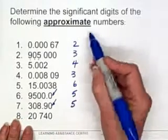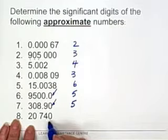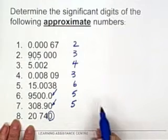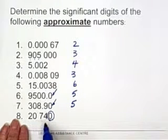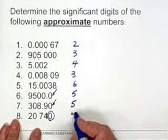And this is an approximate number. We do not count this zero. So we have one, two, three, four significant figures.